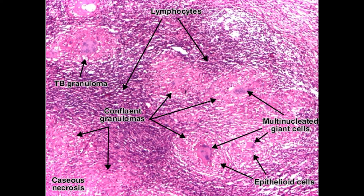These epithelioid cells surround the Th1 cells in a circular fashion. Tumor necrosis factor induces further inflammation, and T cells also gather around this area. This central Th1-sensitized cell surrounded by epithelioid cells and T cells forms a structure called a granuloma. Sometimes the epithelioid cells can fuse together to form a multi-nucleated structure called multinucleated giant cells of Langerhans.